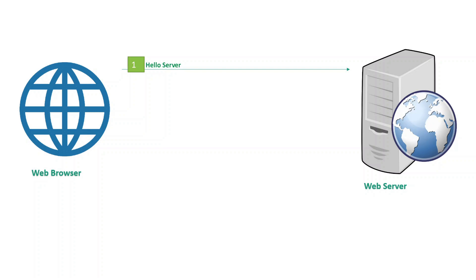Whenever the browser initiates the request, the browser will send a 'hello server' request. Once the request is received by the server, the server sends back 'hello client' along with the certificate of the server. Once the certificate is received by the browser, the browser will check whether the certificate is a valid and genuine one. How does the browser validate it? Whenever you are going to publish any service or deploy a server, you need a certificate. Most companies' website certificates will be signed by certificate authorities.